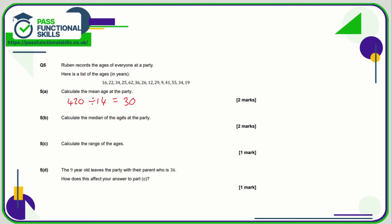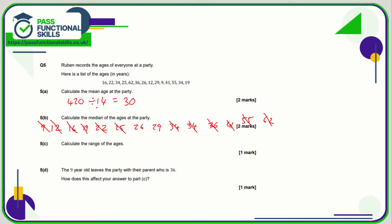The median is the middle age when all the ages are put in ascending order: 9, 12, 16, 19, 22, 25, 26, 29, 29, 34, 36, 41, 55, and 62. For the median, I'm going to chop off one on the left and one on the right, keep going until I isolate one or two values in the middle. It's an even number so we get two values. What's halfway between 26 and 29? Add 26 plus 29 and divide by 2: that comes to 27.5. So the median is 27.5.